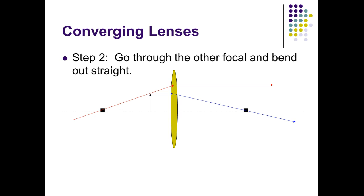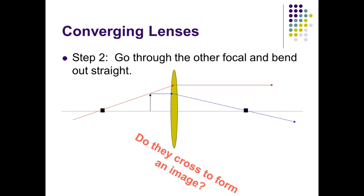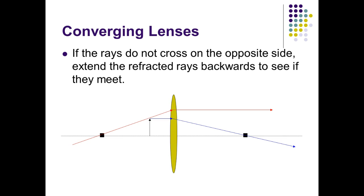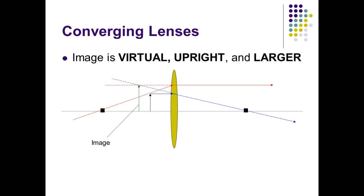It refracts and bends. The image is always formed where the two lines cross. In this case, do they cross to form an image? They do not cross on the opposite side. However, if the rays do not cross on the opposite side, we can extend the refracted rays backwards to see if they meet. My lines on the opposite side of the lens — I'm going to extend them straight back using dotted lines. Those lines are not actually there, but they're being represented. This is where my new image is represented. It's on the same side as the object, which tells us it's virtual. It's upright because the arrow is pointing upward, same direction as the object. And then it's larger — we can tell that because this image is taller.